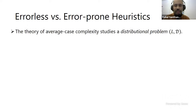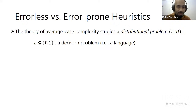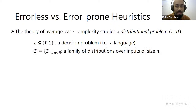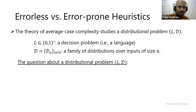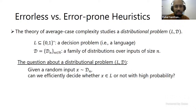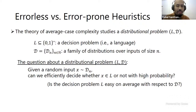The focus of this talk is on two notions of average case complexity. When we talk about average case complexity, we are studying distributional problems — a computational problem (a language) together with a distribution. We want to solve the problem with high probability over the distribution of instances. For decision problems, given an input sampled from distribution D_n, can you efficiently decide whether X is in L or not with high probability?